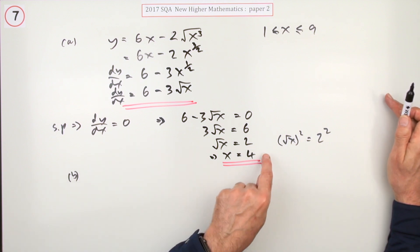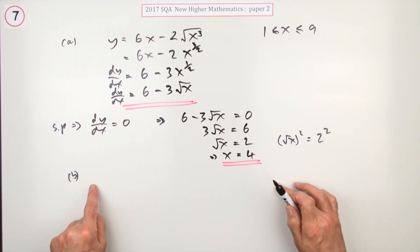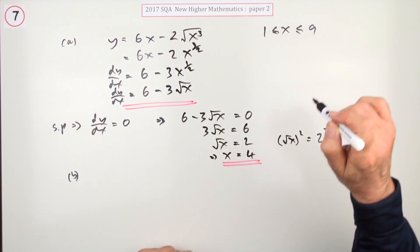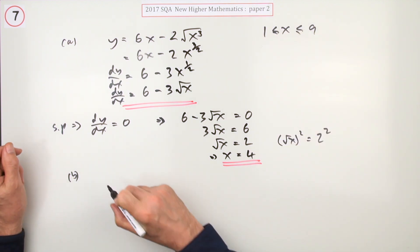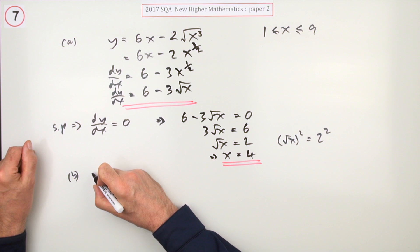So that makes four a contender. So that means for this part here there are three contenders: x is one, x is four, and x is nine, vying for those positions of greatest and least.